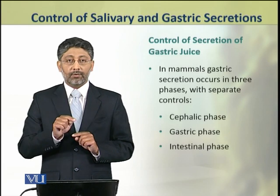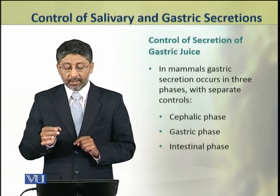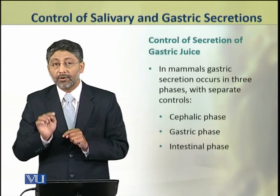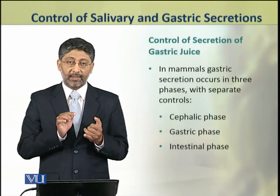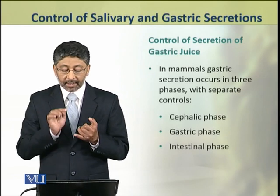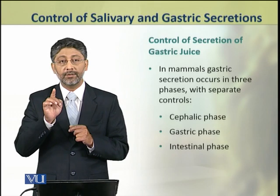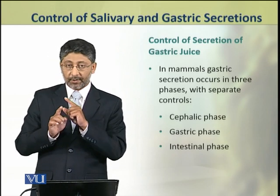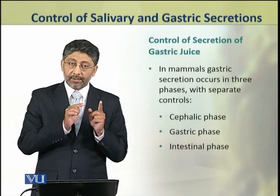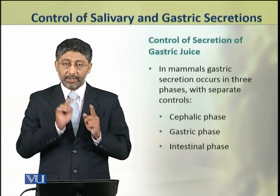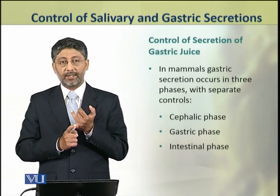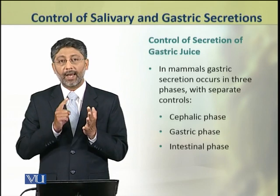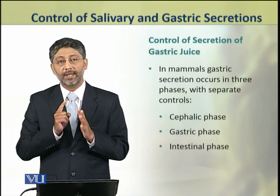Now we shall discuss how the secretion of gastric juice is controlled. In mammals, the gastric secretion occurs in three phases which have separate controls. These phases are the cephalic phase, the gastric phase, and the intestinal phase.